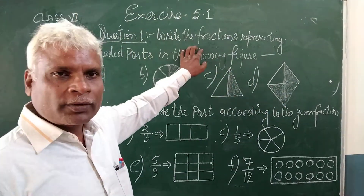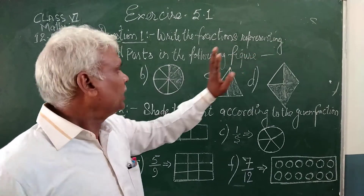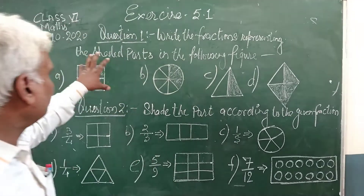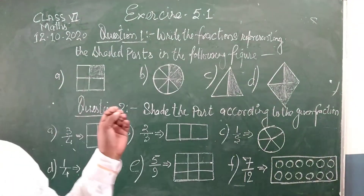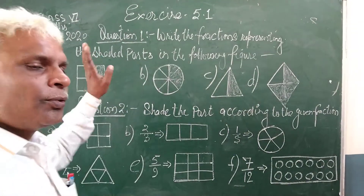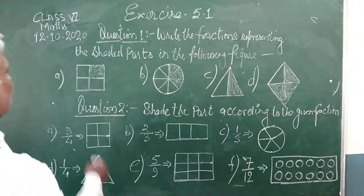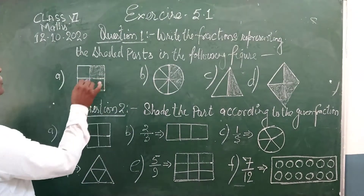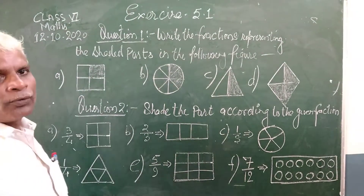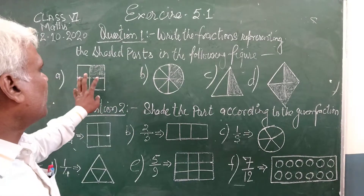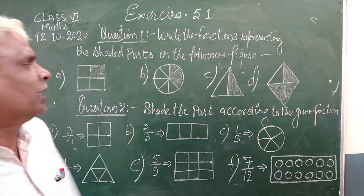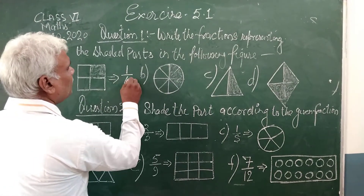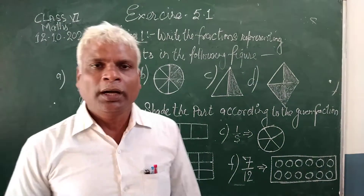Write the fraction representing the selected parts in the following figure. In this figure, the selected portion is a fraction. Now see here — it is a whole figure. How many parts? 1, 2, 3, 4 parts. Out of the 4, one part is shaded. It is 4 parts divided into 4. Then its fraction is 1 upon 4.